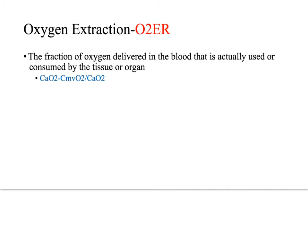The oxygen extraction ratio is the fraction of the arterial oxygen content that is consumed as blood traverses the organs or tissues. It is determined by dividing the difference of the arterial and venous oxygen content by the arterial oxygen content. Normally, oxygen extraction is only 20–30%, indicating a significant excess of oxygen being delivered to the tissues, which allows for extra cushion should oxygen delivery be compromised.